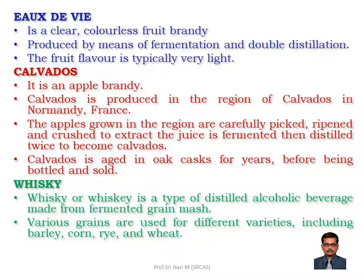Eau-de-vie is a clear, colorless fruit brandy produced by means of fermentation and double distillation. The fruit flavor is typically very light. Calvados is an apple brandy produced in the region of Calvados in Normandy, France. The apples grown in the region are carefully hand-picked, ripened, and crushed to extract juice, which is fermented and then distilled twice to become Calvados. Calvados is aged in oak casks for years before being bottled and sold.